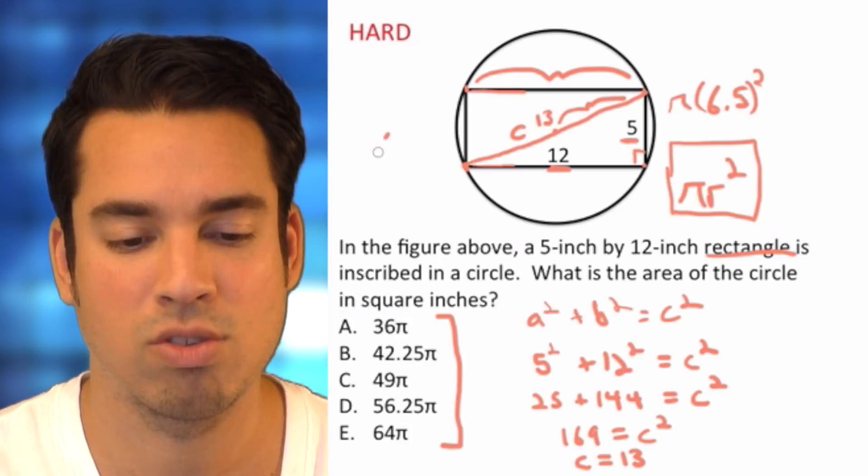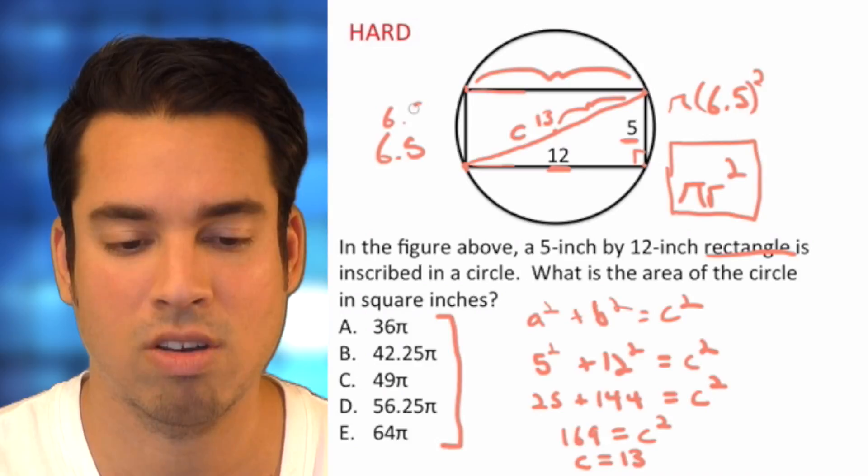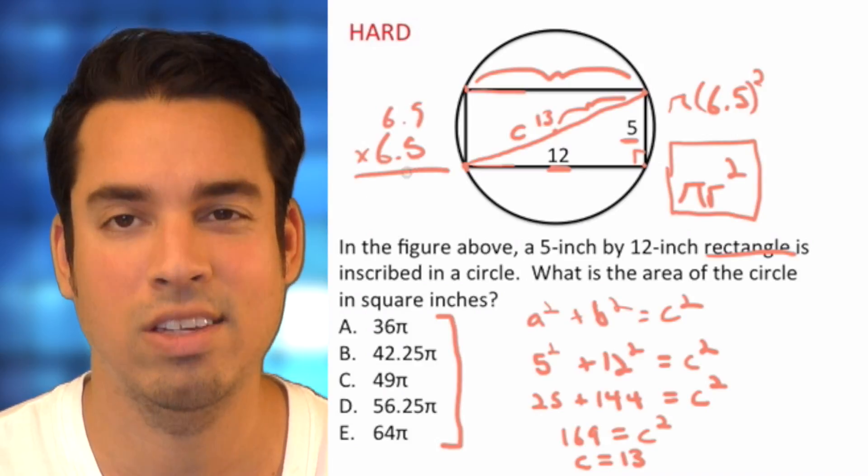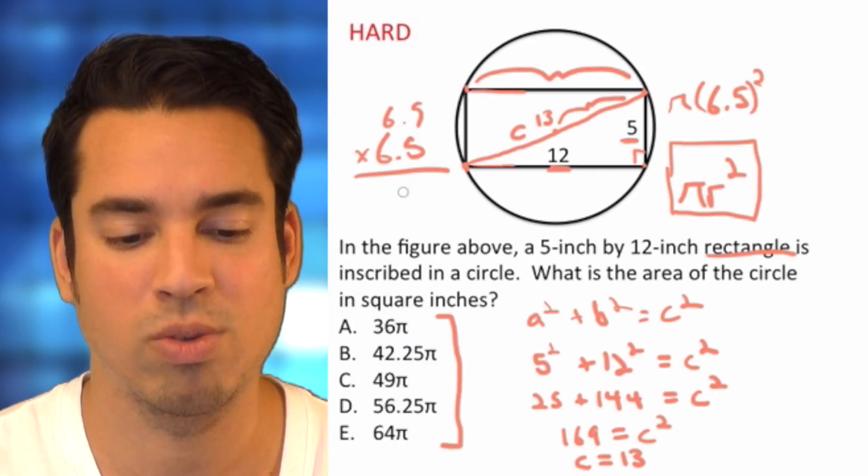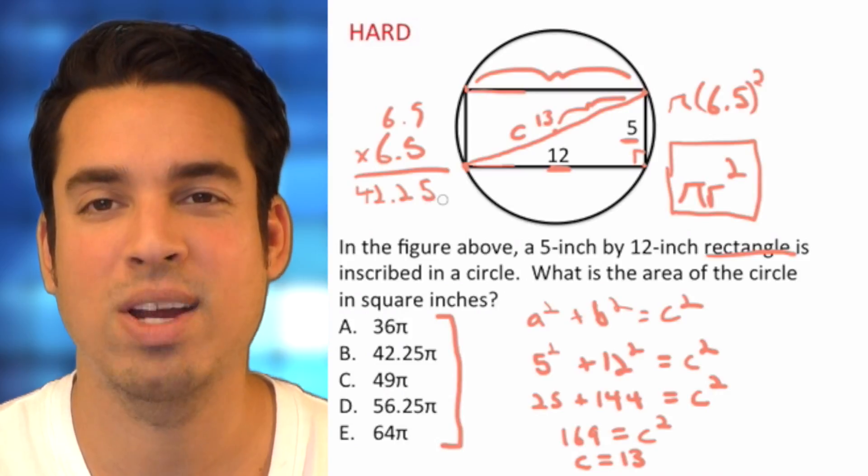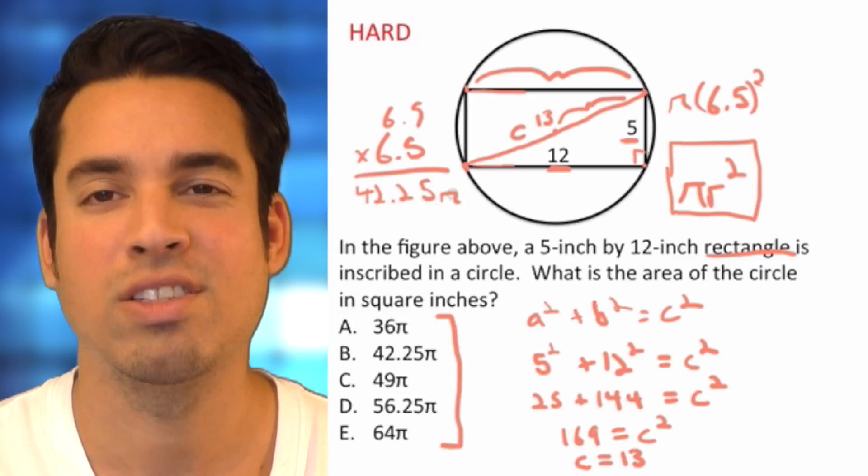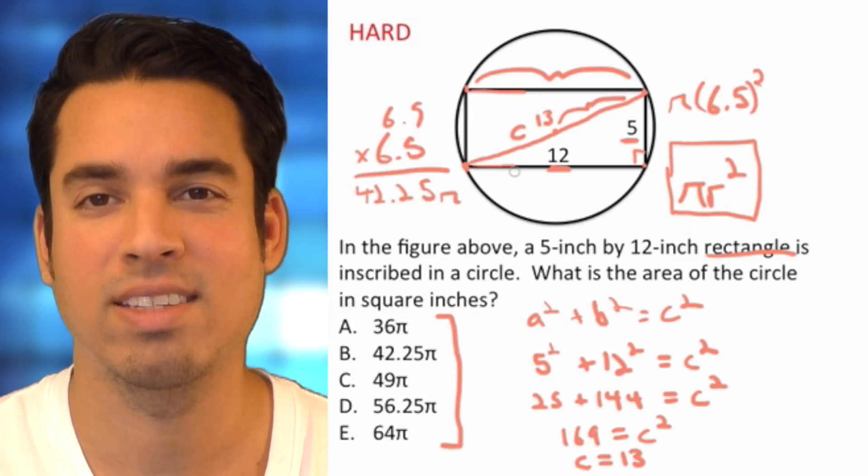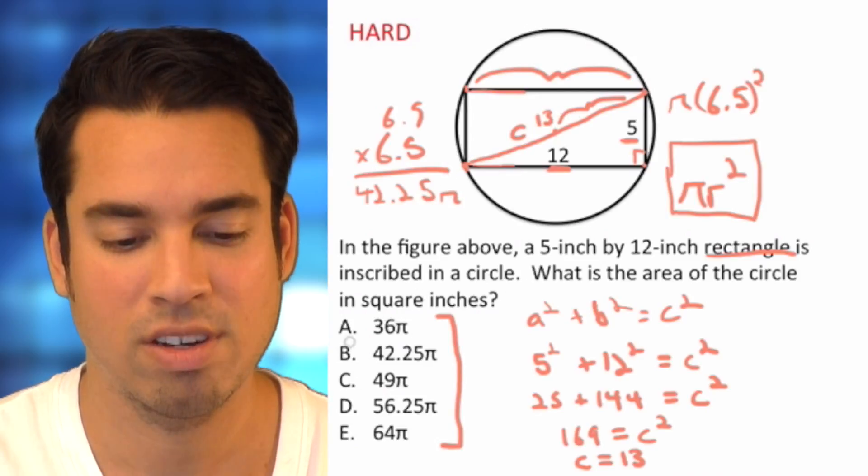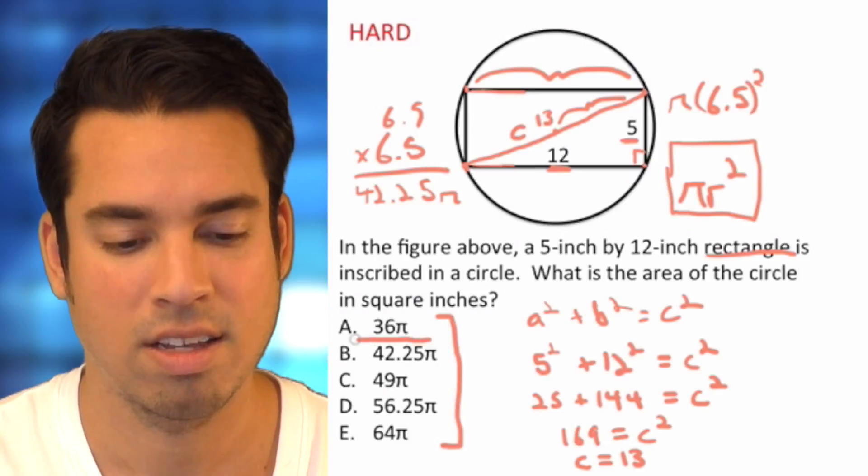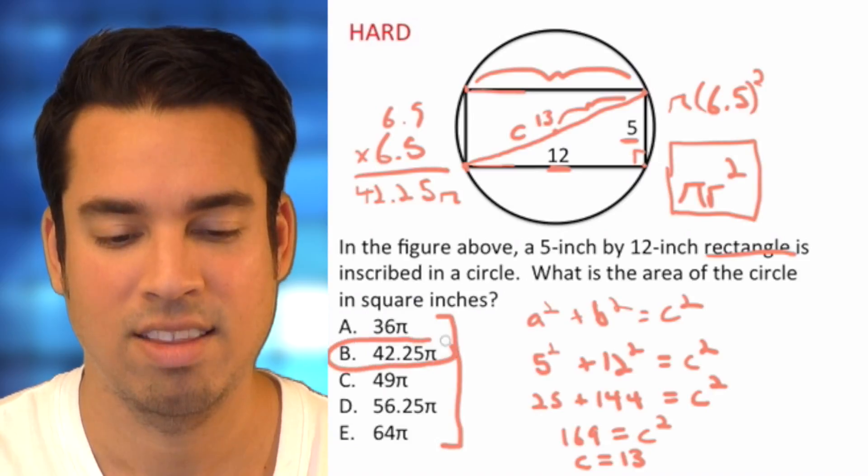So now we just got to figure out what is 6.5 squared. You can do this on your calculator, but 6.5 squared, I will go ahead and tell you, is 42.25. So 42.25 pi is going to be the area of this circle. So our answer is B.